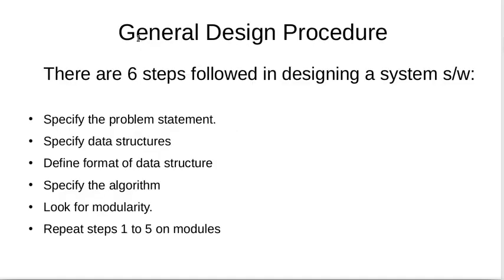For designing any system software, there is a general design procedure that we follow. This design procedure can be broken down into a number of steps — there are six steps which are generally followed. The first is to specify the problem statement. Then we need to specify the data structures we will use for solving the problem. Then we need to define the format of each of those data structures: what type of data they will contain, what will be the size of each data, and so on.